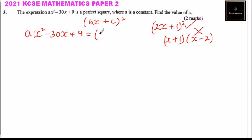Then we look at the constant, which is 9. What numbers when multiplied give 9? The square root of 9 is ±3. So is it -3 or +3?